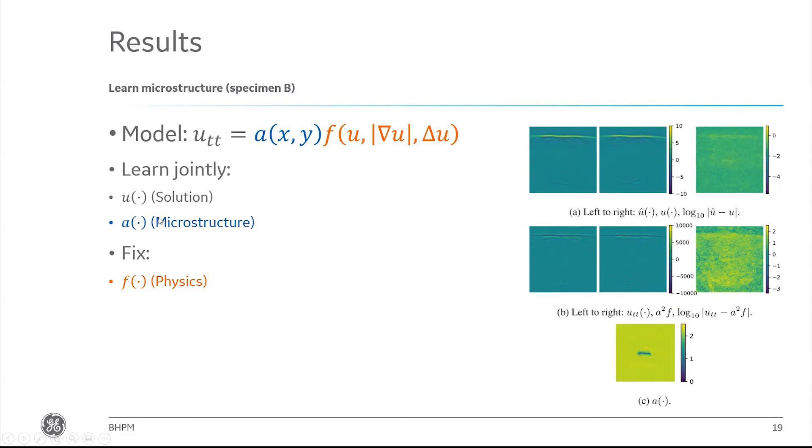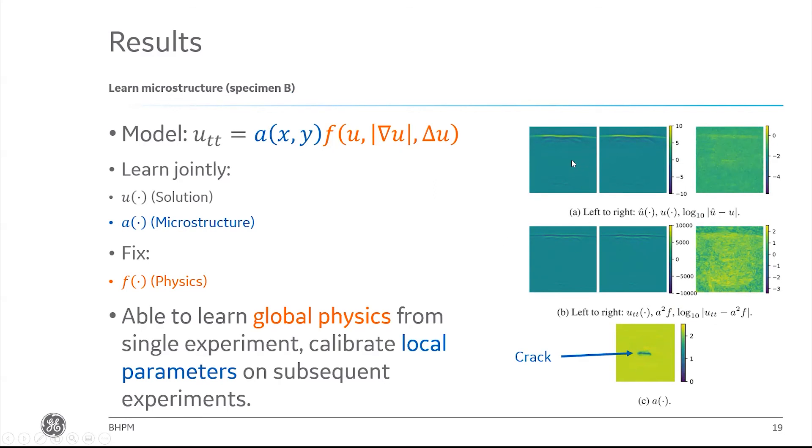It turns out that the answer is yes. We see good agreement again between our representation and the associated left and right-hand sides of the physics. As we look in log space on the errors, they're quite a bit smaller than the magnitude of the signals we're capturing. Perhaps the most surprising part is that our microstructure parameter here for this cracked specimen indicates this local deviation from the homogeneous rest of the material, which we recognize as being a crack. This is quite exciting to us.